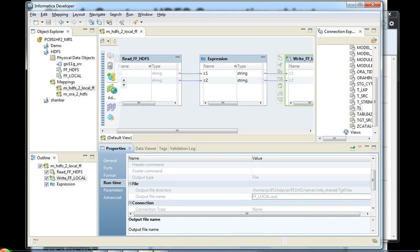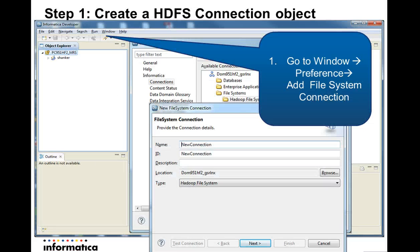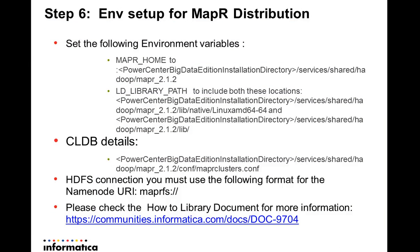That's how simple it is to create a mapping through the Big Data Edition to read or write to HDFS. Now let's look at the parameters and configuration needed to run HDFS reading and writing to a Hadoop MapR distribution. For MapR, there are a few requirements: you need to set environment variables MAPR_HOME and LD_LIBRARY_PATH before you start, pointing to the directory where the Hadoop libraries are — in the Informatica home shared location. You also need to set up the CLDB details in the MapR cluster configuration. For HDFS connectivity in MapR, just provide maprfs:// without specifying any name node. For further information, go to the Informatica communities or the documentation library.